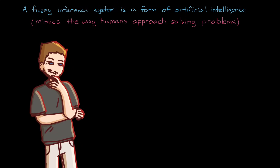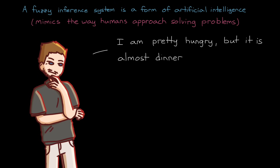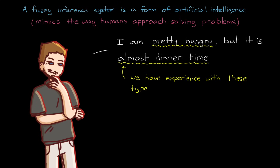For example, a person might say, I'm pretty hungry, but it's almost dinner time. In this statement, pretty hungry and almost dinner time are two vague concepts. What does pretty hungry mean, and how much time precisely is there until dinner? A person probably would have no problem parsing this statement and making a decision to wait until dinner or not. We have experience with these types of statements, and we have knowledge about hunger and meal times that we can use to help us. On the other hand, it would be difficult to get a computer to determine whether a person should eat based on the fuzzy ideas of pretty hungry and almost dinner.